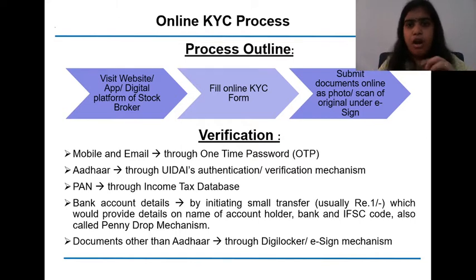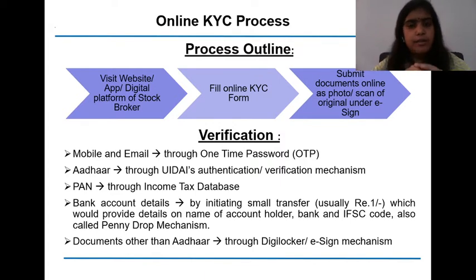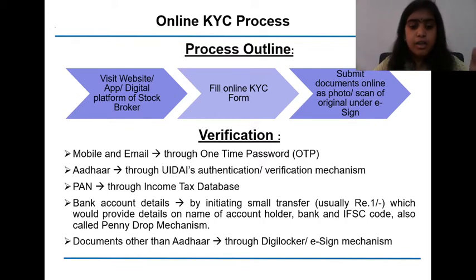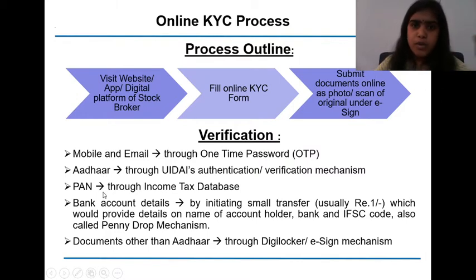We cannot just type a wrong mobile number — the OTP will not come, and if we are not entering the OTP into the form, our form will not go ahead. So verifying mobile and email is important. With OTP — one-time password — we can do it. For Aadhaar, through UIDAI's authentication and verification mechanism, we can verify the Aadhaar. For PAN, they will check it with the database of the Income Tax Department to verify our PAN.